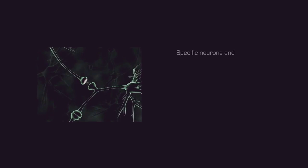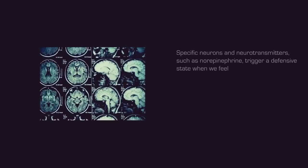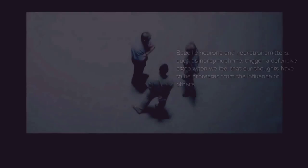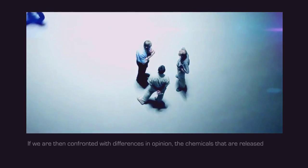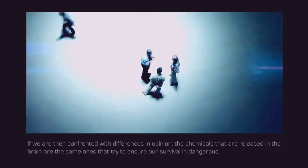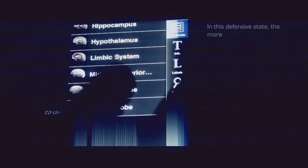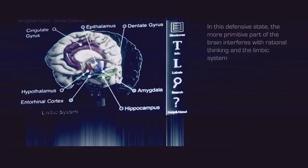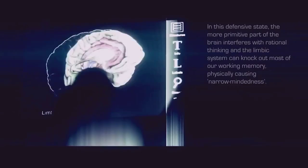Specific neurons and neurotransmitters, such as norepinephrine, trigger a defensive state when we feel that our thoughts have to be protected from the influence of others. If we are then confronted with differences in opinion, the chemicals that are released in the brain are the same ones that try to ensure our survival in dangerous situations. In this defensive state, the more primitive part of the brain interferes with rational thinking, and the limbic system can knock out most of our working memory, physically causing narrow-mindedness.